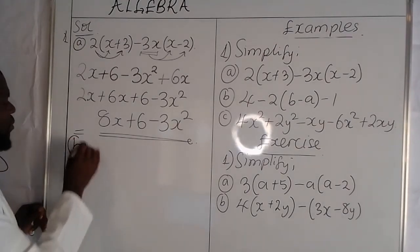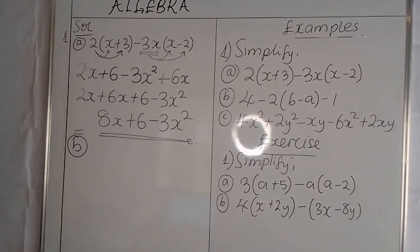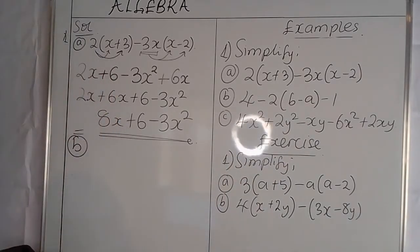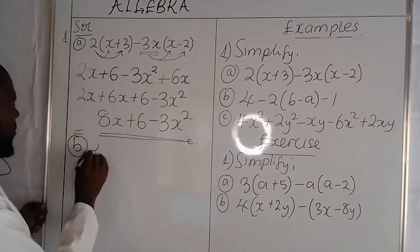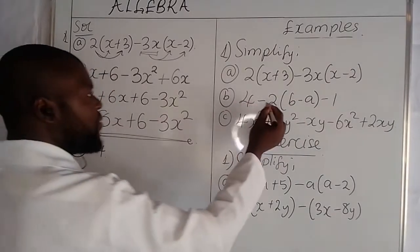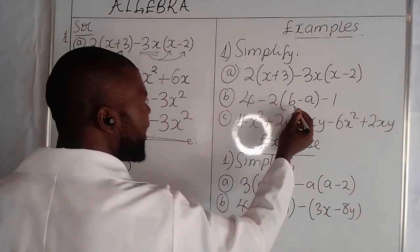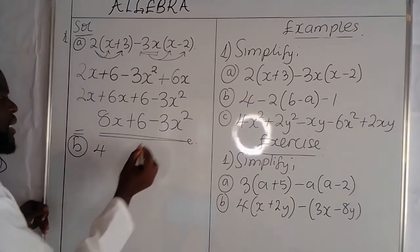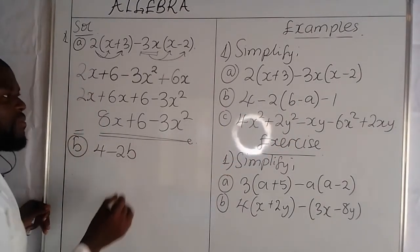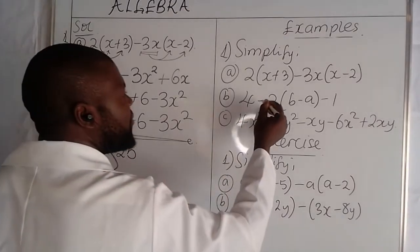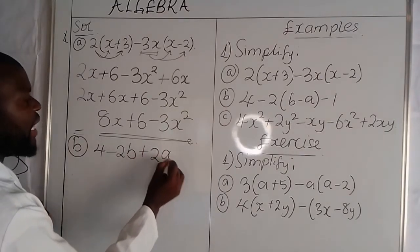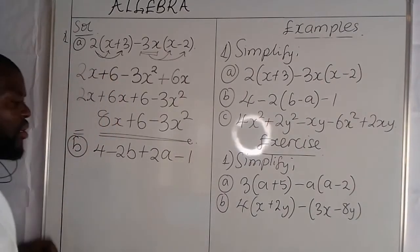Let's look at our second example. We have 4 minus 2 open bracket D minus A close bracket minus 1. So this 4 we just copy as it is. Now we have negative 2 times B, so we multiply this negative 2 by B and by negative A. We shall say negative 2 times B gives negative 2B, and negative 2 multiplied by negative A gives positive 2A. At the end we have a minus 1.